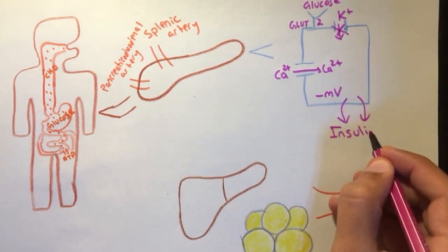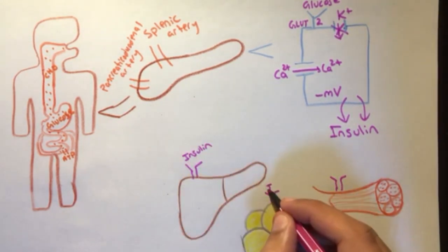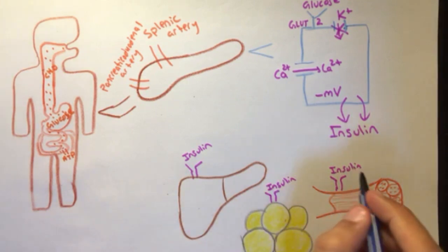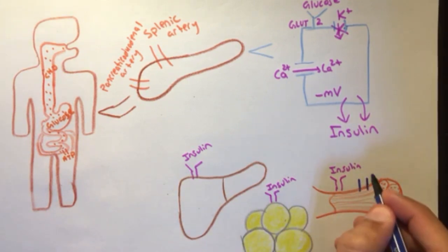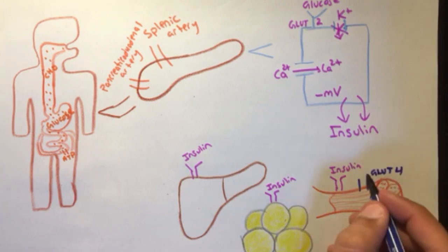Now, insulin binds to its tyrosine kinase receptor in the liver, adipose tissue, and muscle. The main function of insulin is to decrease blood glucose levels in blood by causing uptake of glucose by GLUT4 into cells to be used up as energy, meaning that it will be removed from the blood.